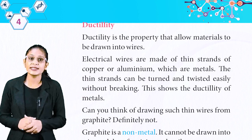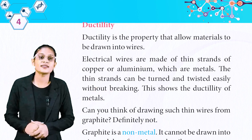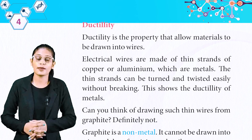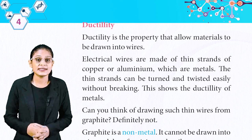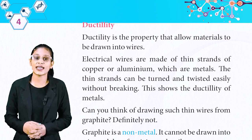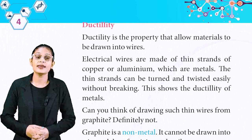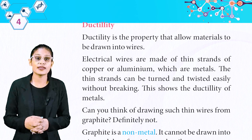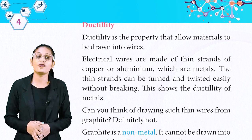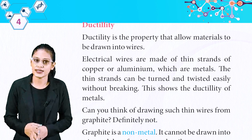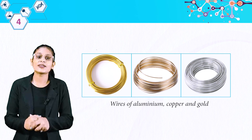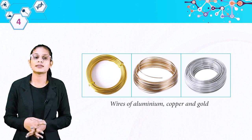Ductility is the property that allows materials to be drawn into wires. Electrical wires are made of thin strands of copper or aluminium, which are metals. The thin strands can be turned and twisted easily without breaking. This shows the ductility of metals. Can you think of drawing thin wires from graphite? Definitely not — graphite is a non-metal. It cannot be drawn into wires and therefore it is not ductile. Look at these pictures: wires of aluminium, copper and gold.